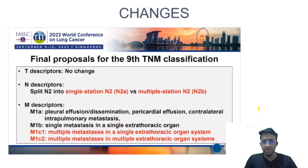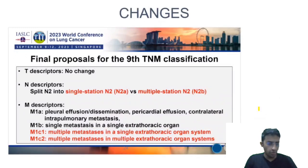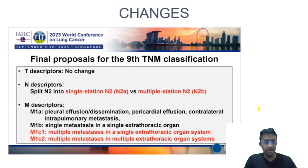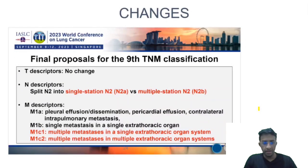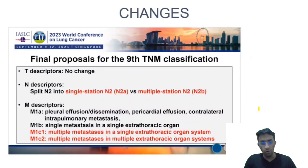The changes from the 8th edition to the 9th edition: in T-staging, the tumor staging, there were no changes. The major changes were brought in the N-staging — specifically N2, which was split into N2A and N2B. If it involves a single station, it is N2A; if it involves multiple stations, it is N2B.